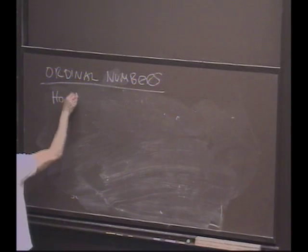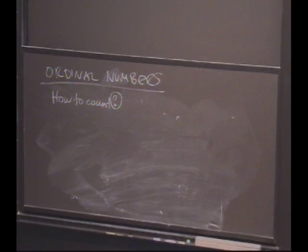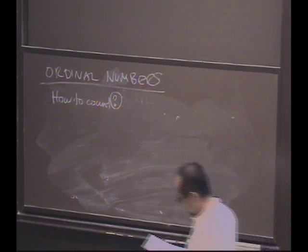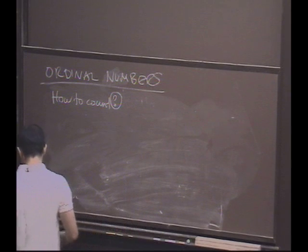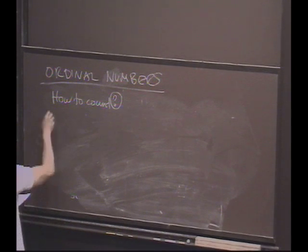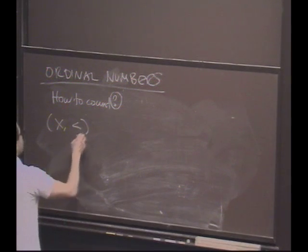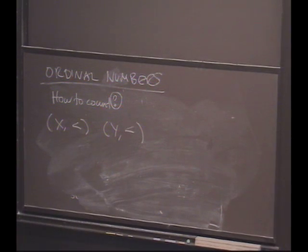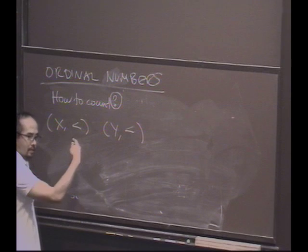But let's first talk about ordinal numbers — this is really the question of how to count. We're going to try to think about counting in a sort of more general framework. The first thing I want to do is talk about orderings and then see if this might give us a way of counting. So suppose I have a set X with an order on the set, and maybe another set Y with an order on the set.